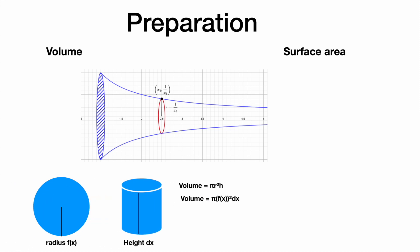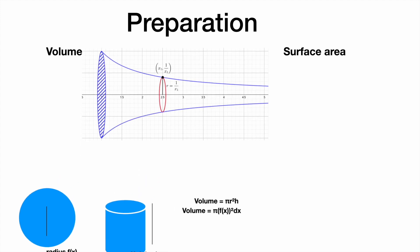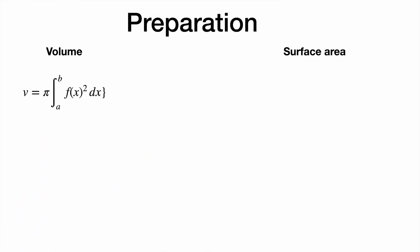The cylinder created by these slices has a volume of pi times r squared times h, where r is the radius of the circle and h is the height. And therefore, the formula for the volume of such a cylinder is pi times f of x squared dx.